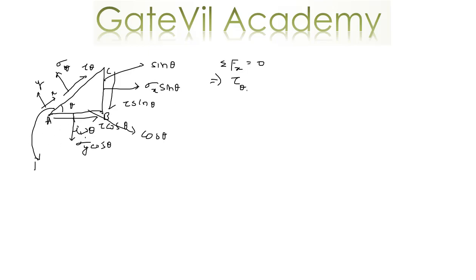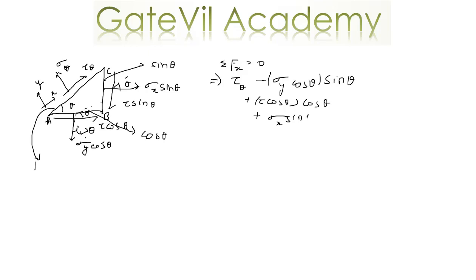This angle is theta, so the sine component of Sigma Y cos theta is in the negative direction: minus Sigma Y cos theta times sine theta. Then there is a component of tau cos theta in the positive X direction: plus tau cos theta times cos theta. Sigma X sine theta also has a component in the direction of tau theta equal to Sigma X sine theta cos theta, and then minus tau sine theta times sine theta.